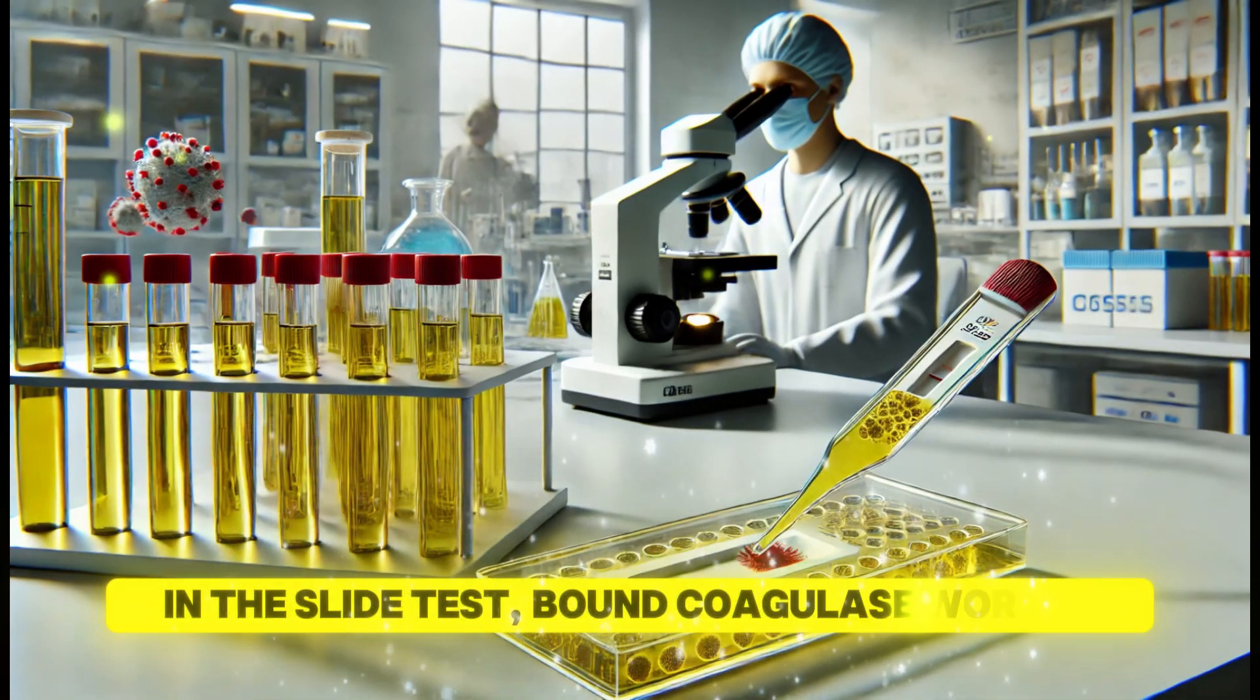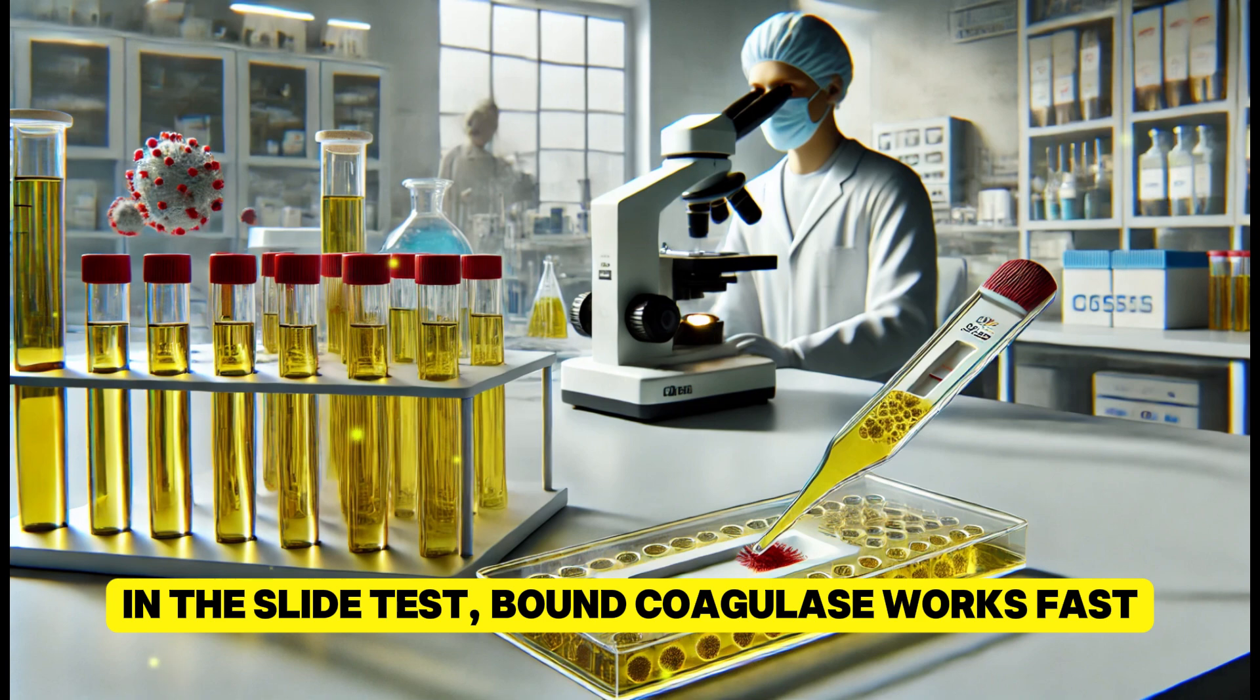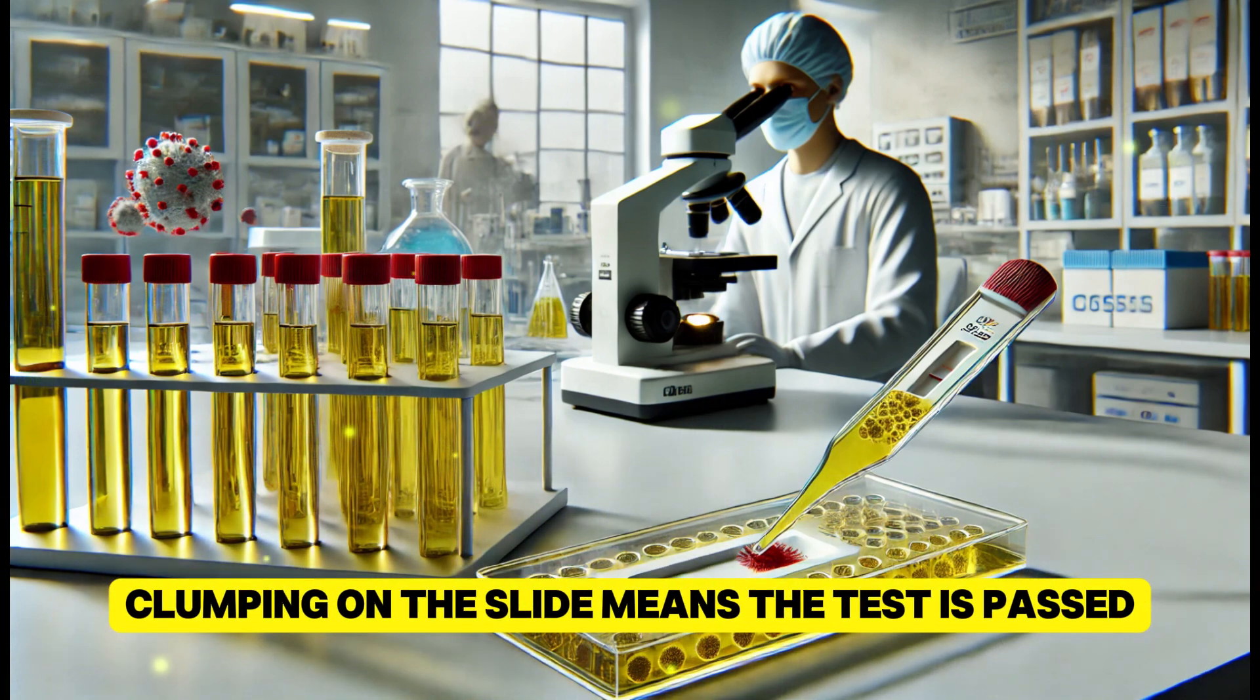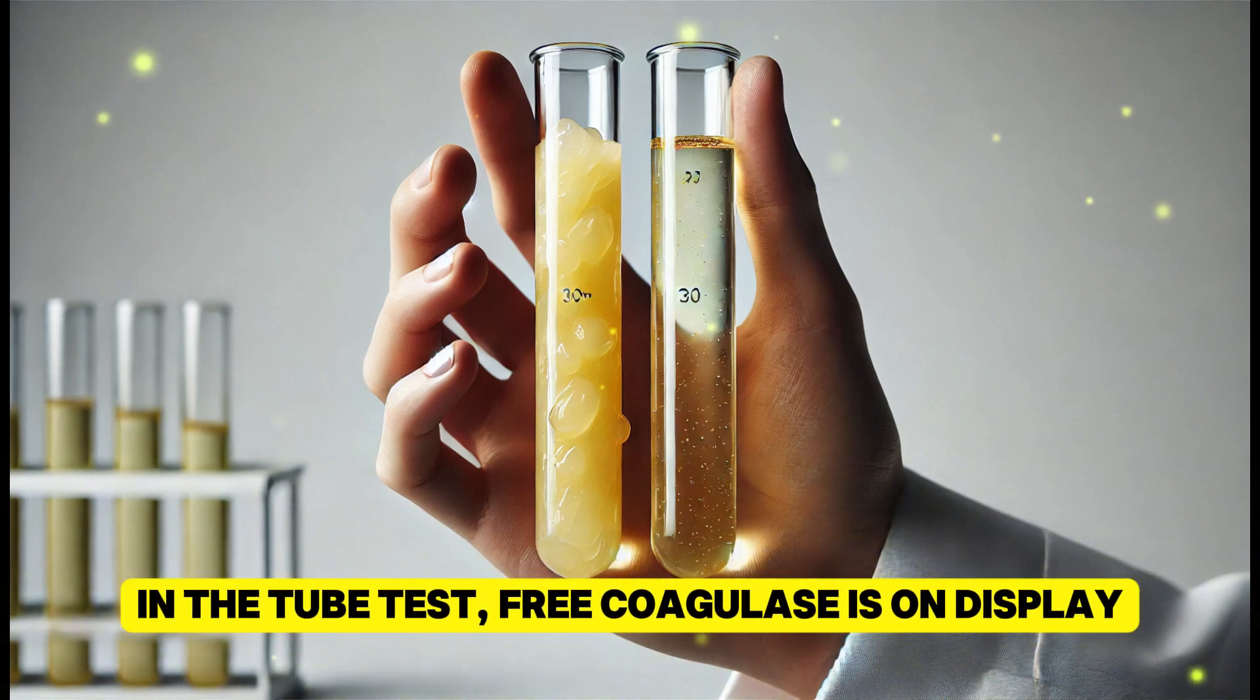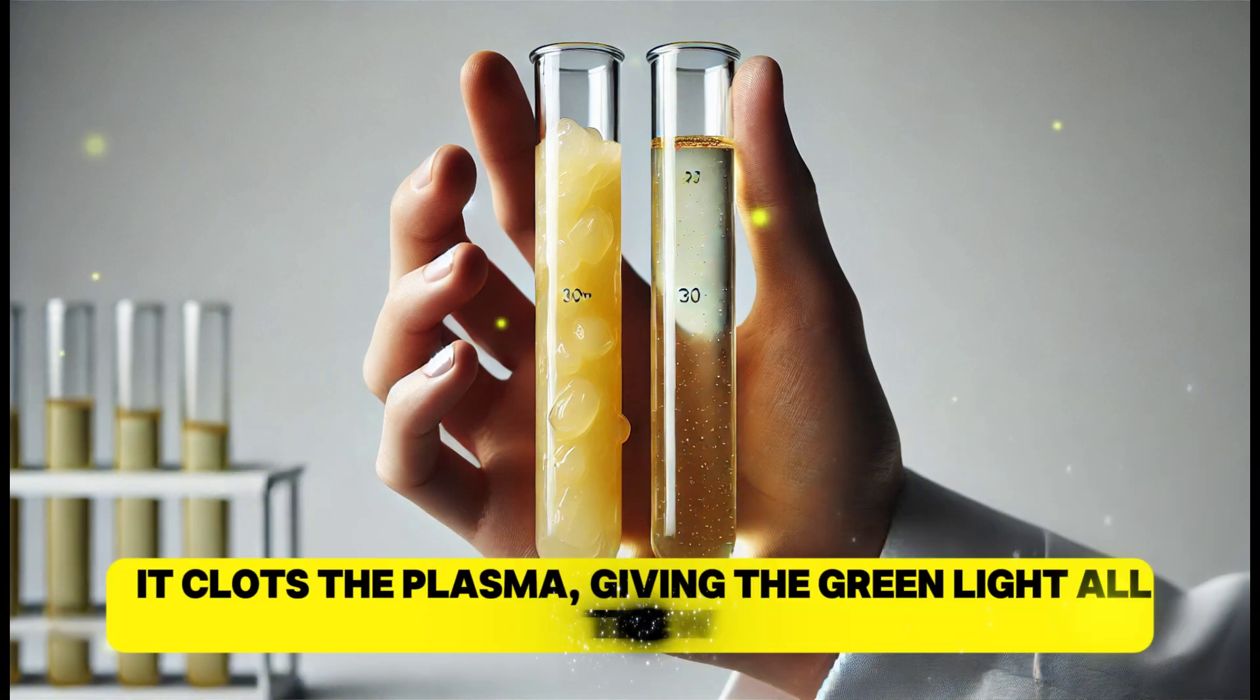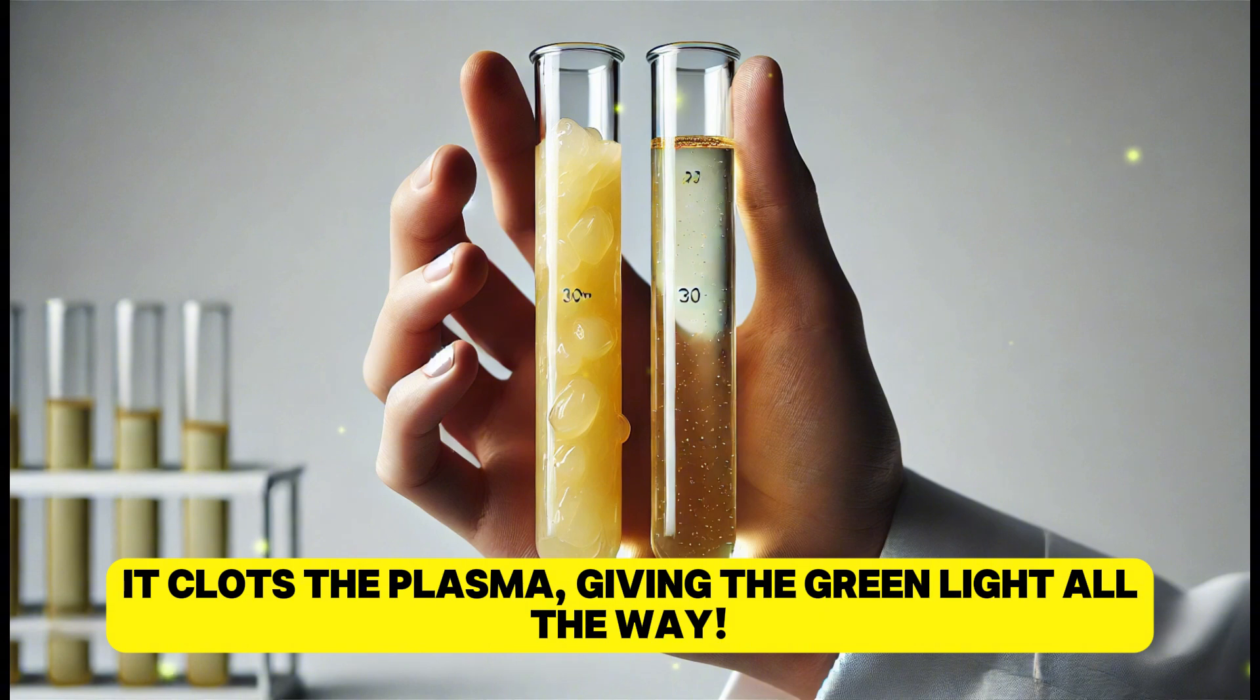In the slide test, bound coagulase works fast. Clumping on the slide means the test is passed. In the tube test, free coagulase is on display. It clots the plasma, giving the green light all the way.